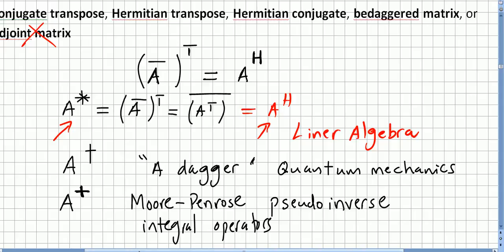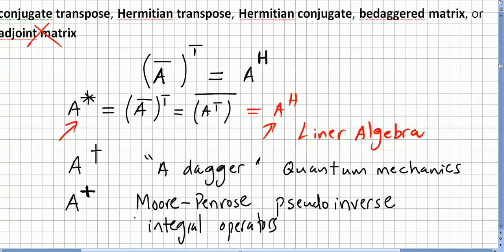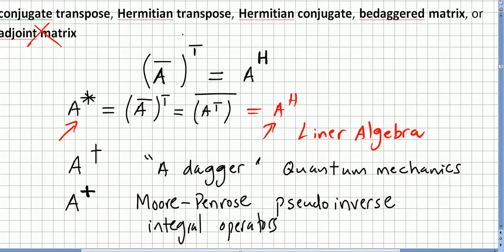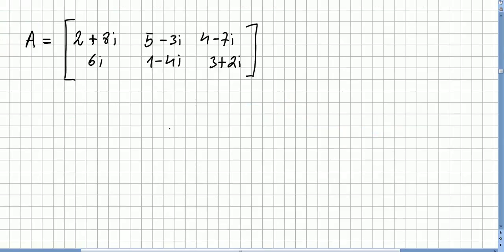So conjugate transpose or Hermitian transpose. And let us keep in mind this notation, and probably even this easier one that reminds us, Hermit, a famous French mathematician. So this will be this Hermitian matrix.